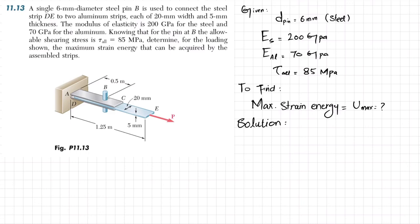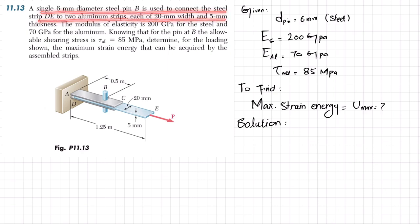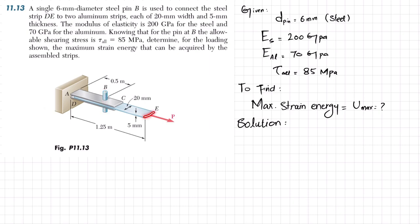Welcome back. Problem 11.13: a single 6 millimeter diameter steel pin is used to connect the steel strip DE to two aluminum strips, each of 20 millimeter width and 5 millimeter thickness. This is pin B assembling the steel strip, and the upper and lower strips are aluminum strips held by pin B. The modulus of elasticity is 200 GPa for steel and 70 GPa for aluminum.